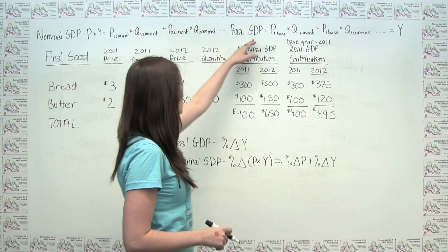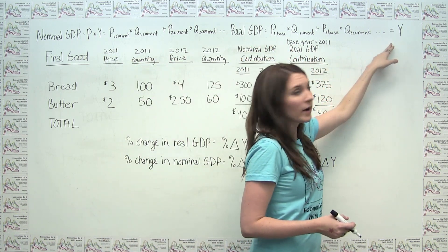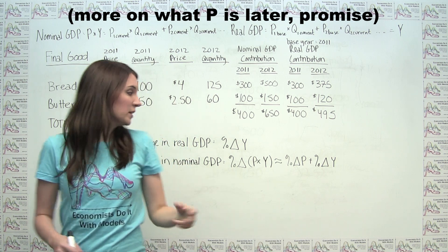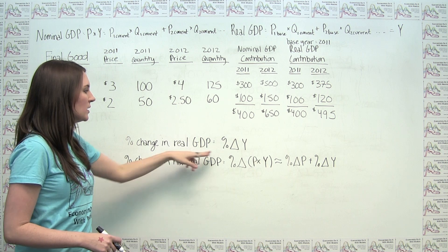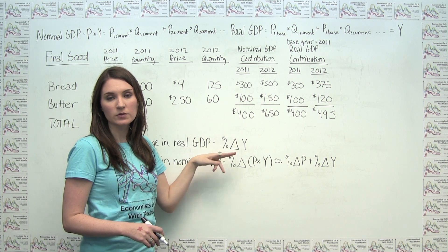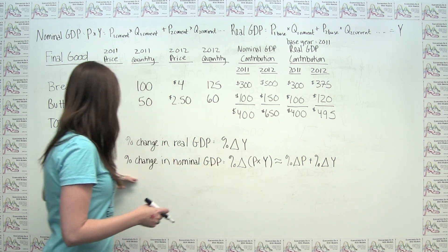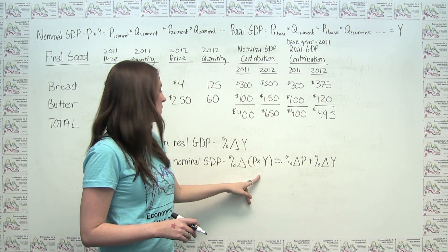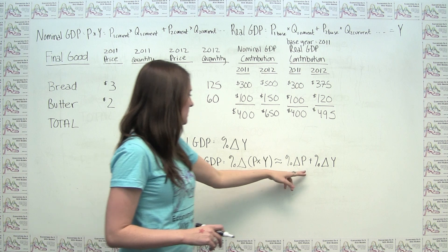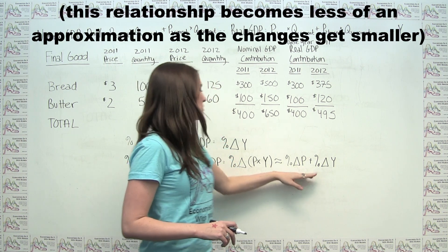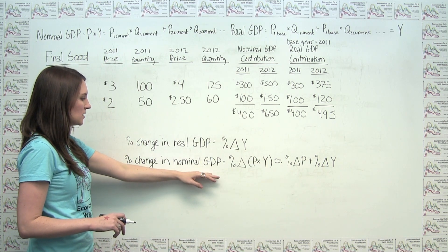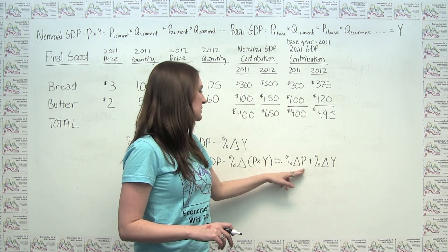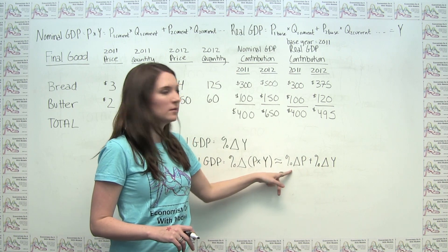Because we've defined real GDP, or real output or income, by Y, and nominal GDP, or nominal output or income, by P times Y, we can think of the percent change in real GDP as just the percent change in Y — the percent change in the real amount of stuff being produced. The percent change in nominal GDP is the percent change in P times Y, which to an approximation equals the percent change in P plus the percent change in Y. So when thinking about percent changes in nominal GDP, we're considering both the increase in real output and the percent change in the overall price level.